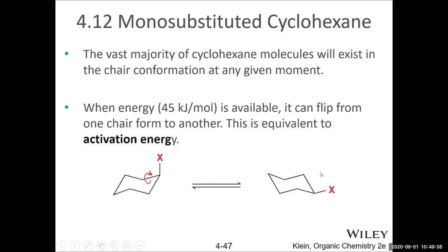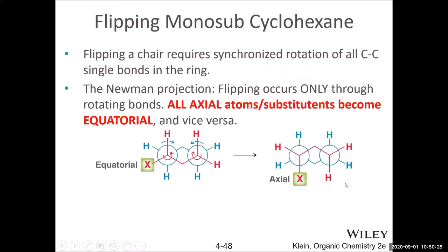Measurements show only a 5% chance of the methyl group being in the axial position and a 95% chance of it being in the equatorial position. This is called 1,3-diaxial strain. The 1,3 means: if we number carbon 1 as the one bearing the substituent, carbon 3 also bears hydrogens that have a repulsive force with the methyl group — that is the 1,3-diaxial interaction. It is somewhat like a gauche interaction between the methyl group and the adjacent CH2.